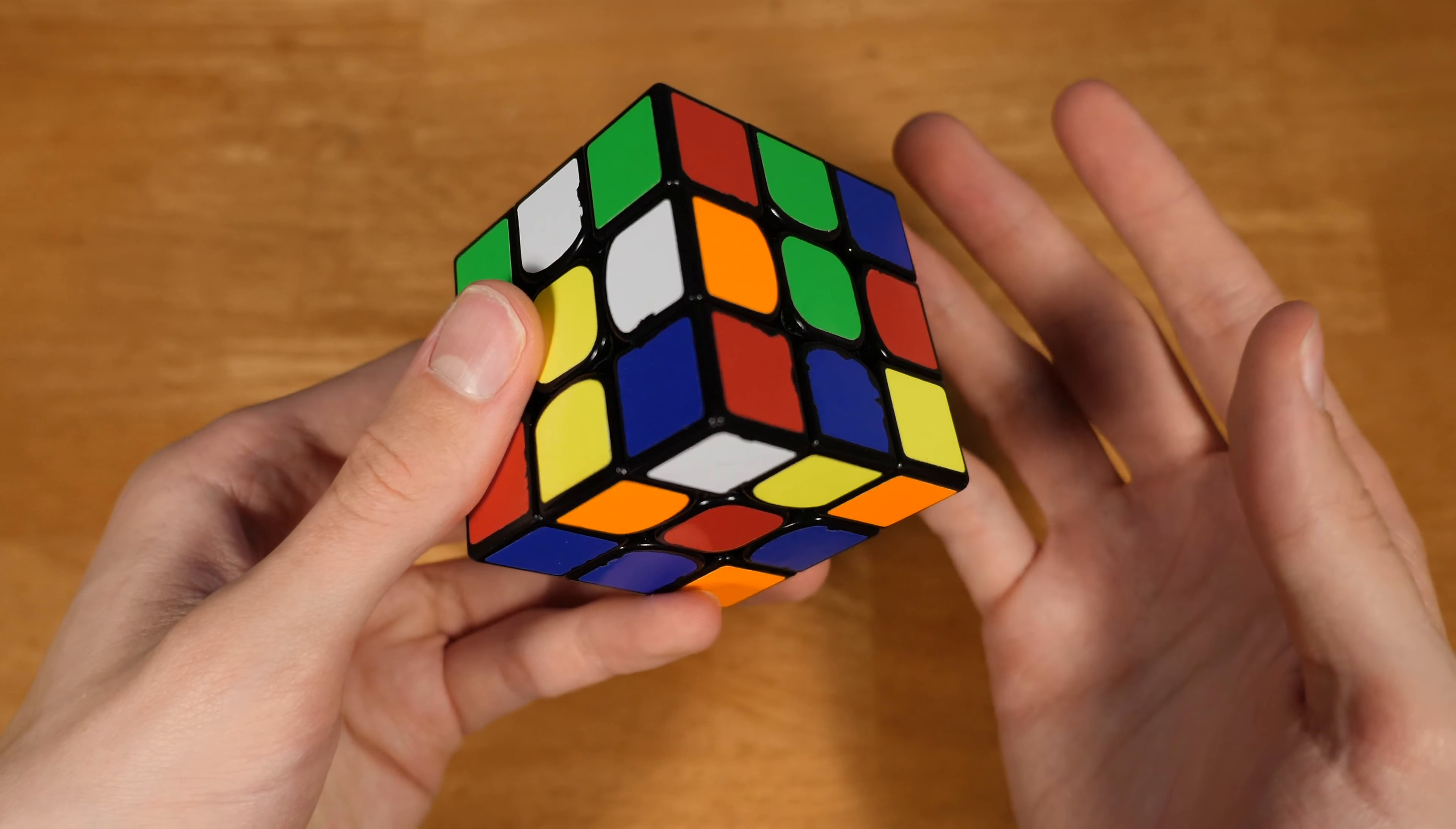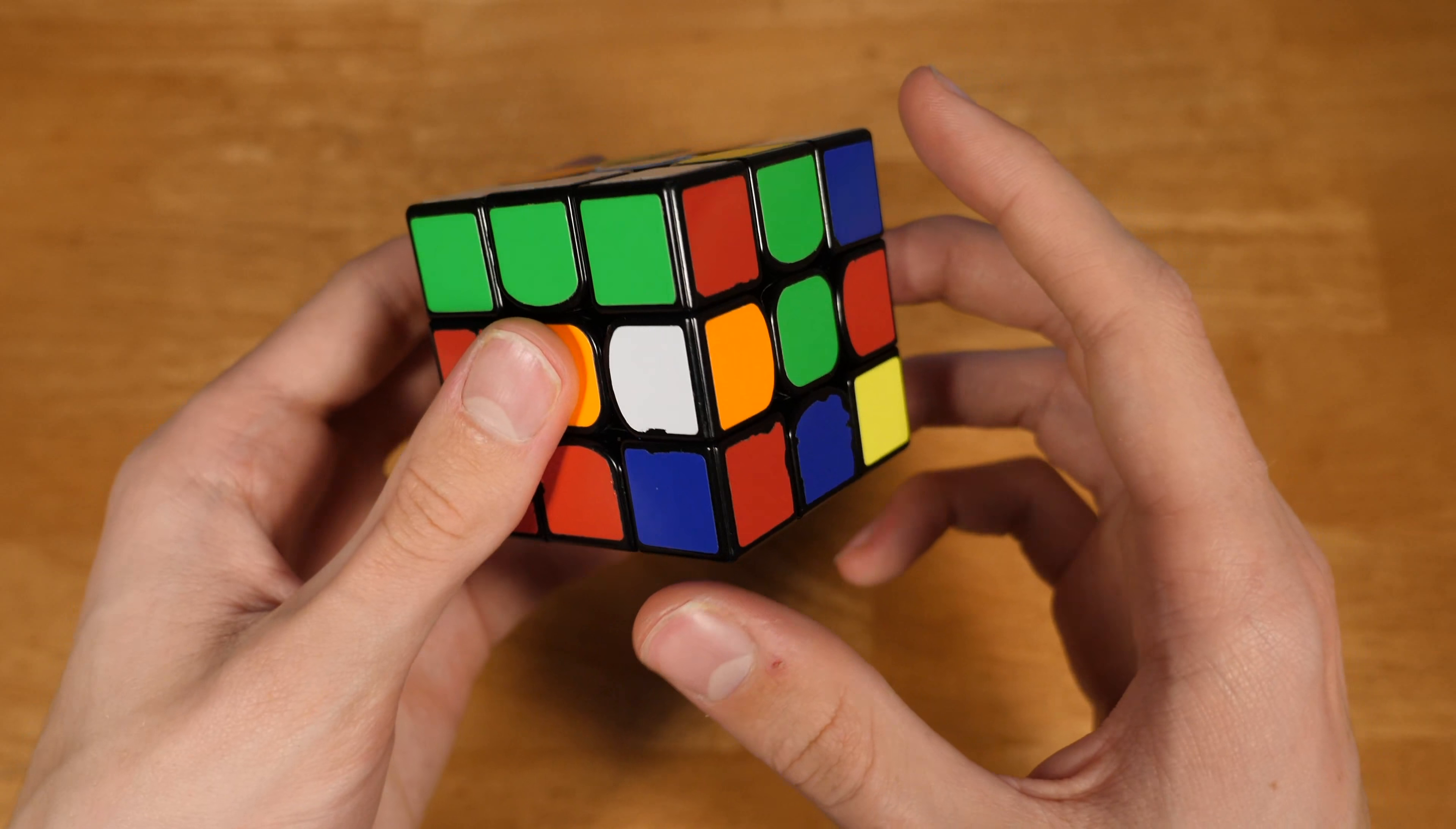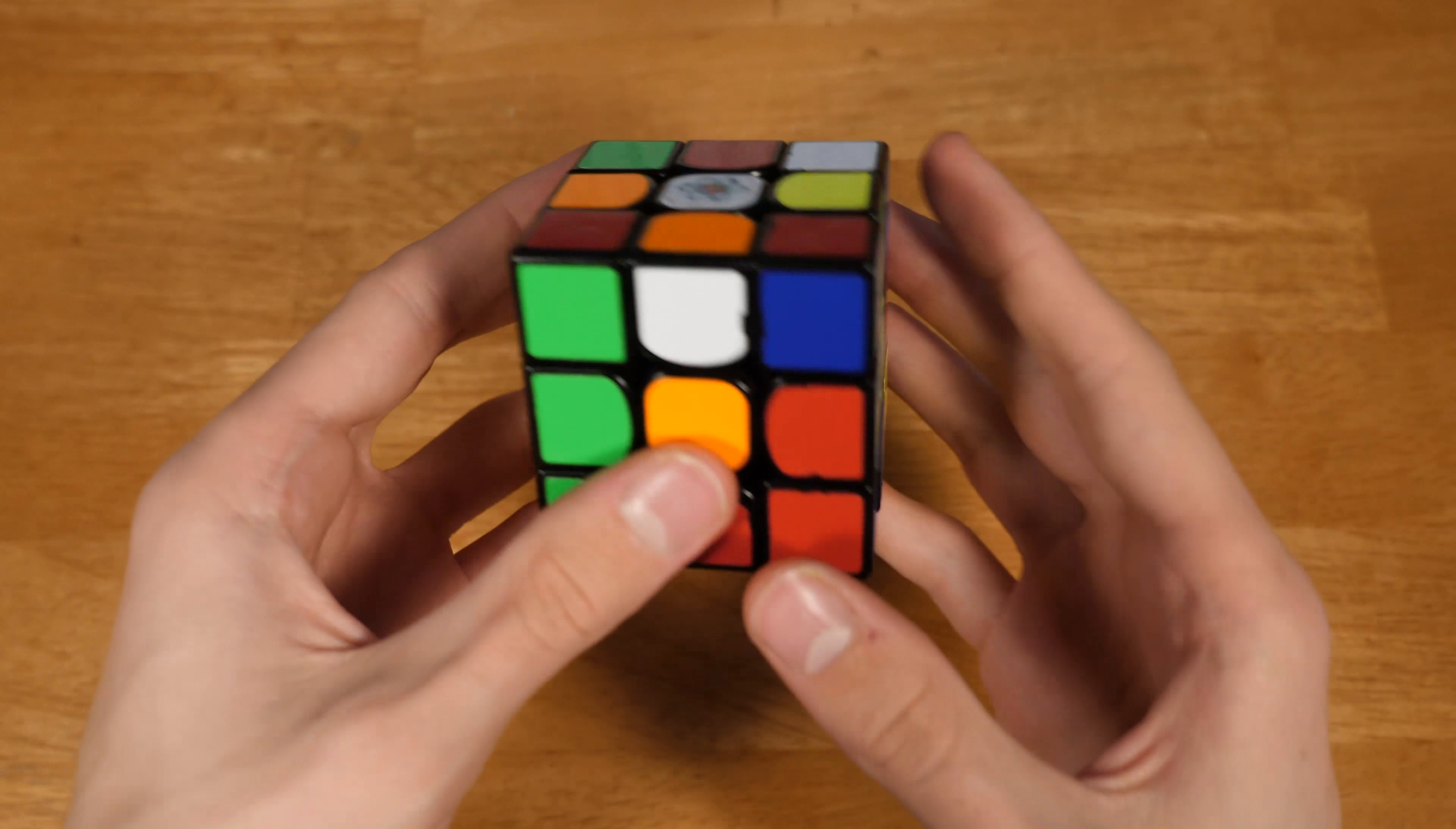What Sung Hyuk Nam does is he kind of does an rw prime r, so basically he's doing like an m move, f prime, and then he has his block here.